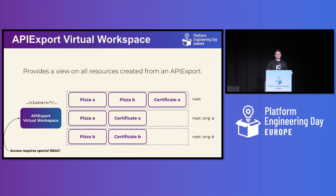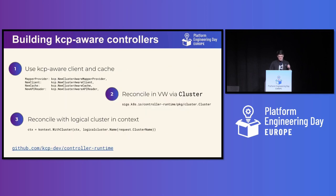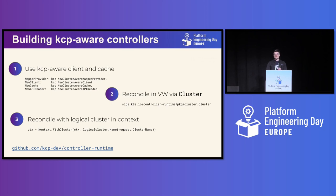This is extremely useful to build controllers to reconcile your API — so what you've been doing in Kubernetes, you can do in KCP at a grander scale, because you get all these different teams in workspaces creating resources. Creating KCP-aware controllers is very simple — there are just three things you need to know: a KCP-aware client and cache, then talking to the virtual workspace, and setting in your context which logical cluster or workspace to talk to. There's also a fork of controller-runtime that we maintain which will allow you to build KCP-aware controllers.